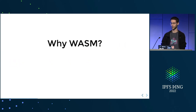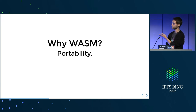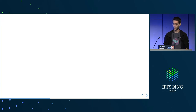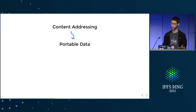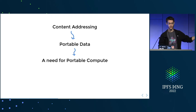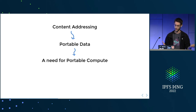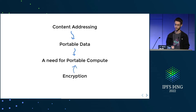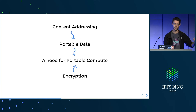The answer is we are hoping for efficiency and portability. Why portability? Because if you have content addressing, then you get portable data, which is really nice, but that means you want to have portable compute. Because now your data lives somewhere else — that might be a phone, a laptop, a data center, whatever. You want to do something with this data, and it depends on the environment, so you want to have something that's super portable.